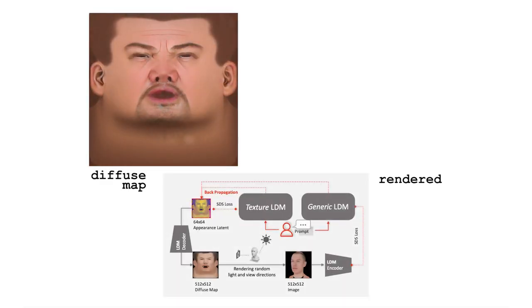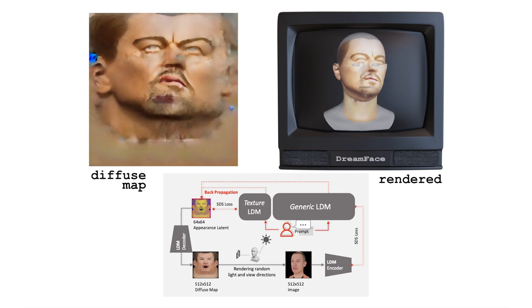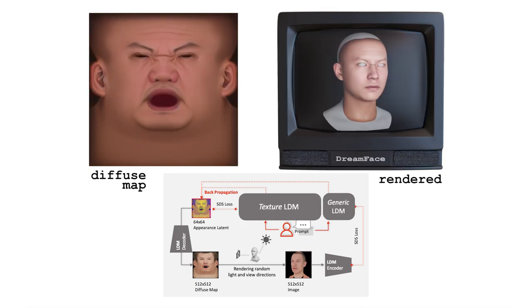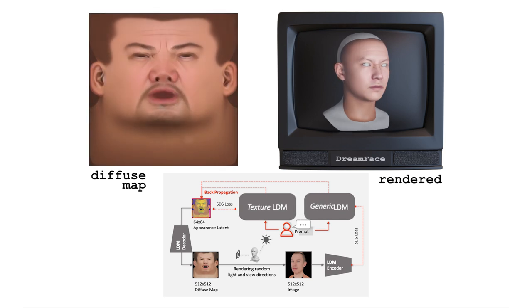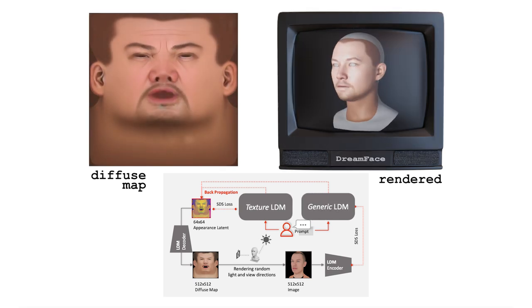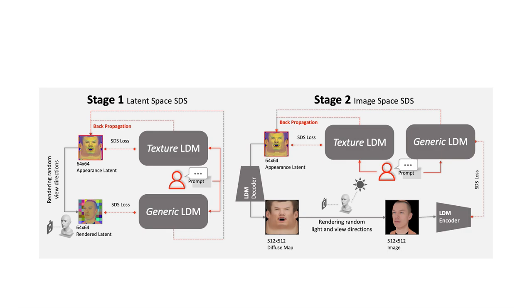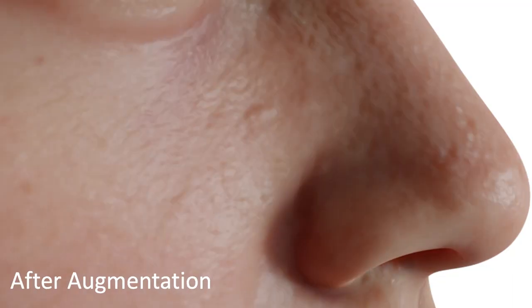Next, we developed a joint optimization scheme that coordinates two diffusion processes: one for denoising texture maps directly and the other for supervising rendered images, to ensure that both the correct formation of texture maps and rendered images are consistent with the text prompts. To improve generation efficiency, we develop a latent space denoising stage. As the final step, we apply the Physically Based Texture Generator and Super Resolution module to generate 4K Physically Based Textures for high-quality rendering.